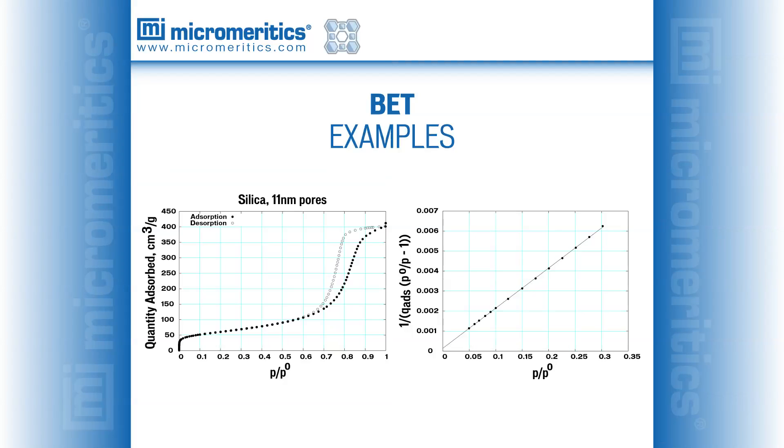Silica alumina is a common catalyst support. It is an amorphous material with 10 nm pores. This material yields a Type IV isotherm and the surface area is greater than 200 m squared per gram.